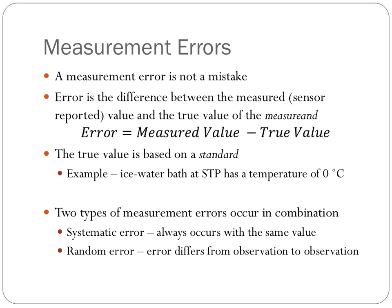You may be wondering how we get this true value. The true value of what we're trying to measure, which is called the measurand, is based on what's called a standard. A standard is something that we know to a high degree of precision has a particular value. For example, ice water that's mixed together well at standard temperature and pressure has a known temperature of zero degrees Celsius. So if I want to determine the error associated with a measurement with a transducer or a sensor that measures temperature, I can place that device into an ice water bath and know that it should have a true value of zero degrees Celsius. If my transducer does not read zero degrees Celsius, then I have some type of measurement error.